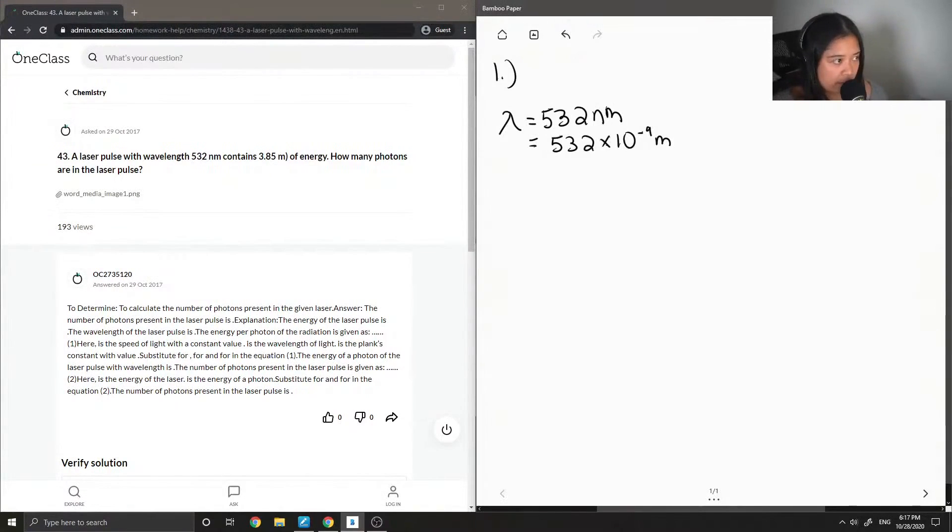We also know the energy of this laser pulse. I'm going to write energy of pulse, and it's 3.85 millijoules, but I'm going to convert this to joules. So it's 3.85 times 10 to the negative 3 joules in the laser pulse.